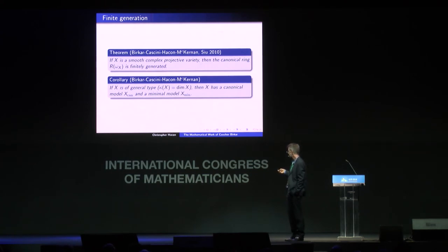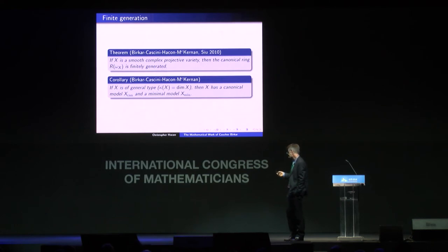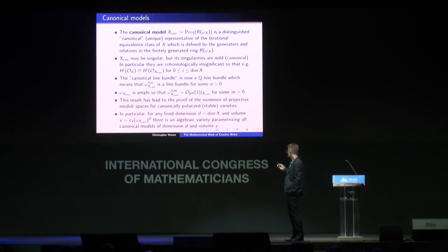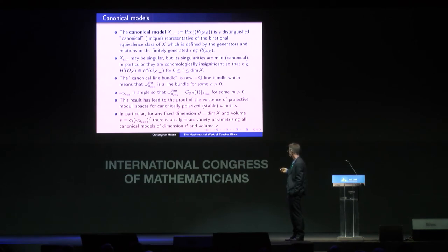One consequence is that if you consider a variety of general type — so the one where the Kodaira dimension is as large as possible, the analog of genus greater than or equal to two in higher dimension — then X has a canonical model and a minimal model. The canonical model is the distinguished representative we were seeking. It is defined by the canonical ring: you consider the generators and relations from the canonical ring, and that defines the canonical model. When your variety is of general type, this is the unique distinguished representative of the birational class.